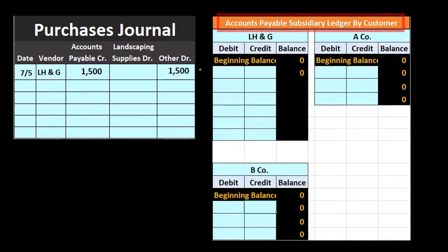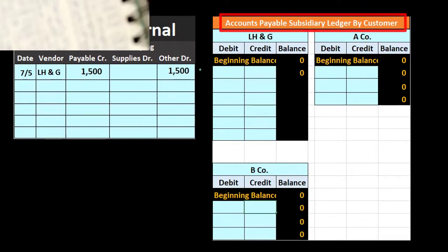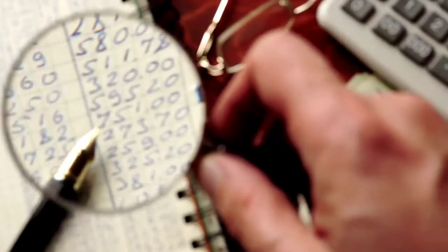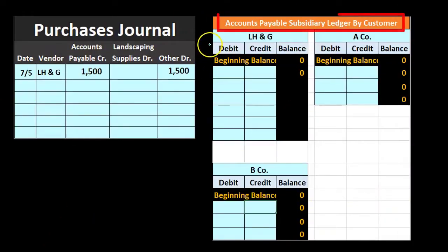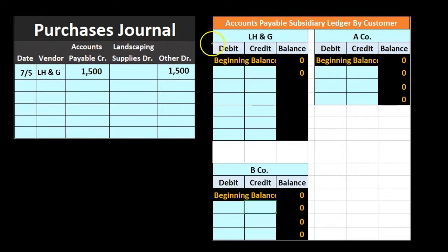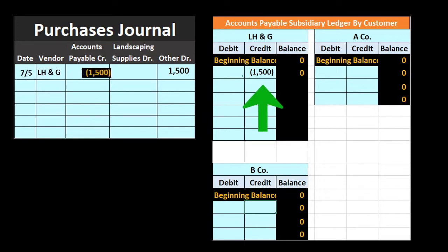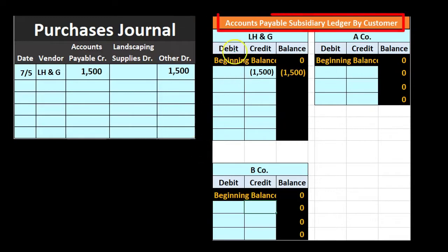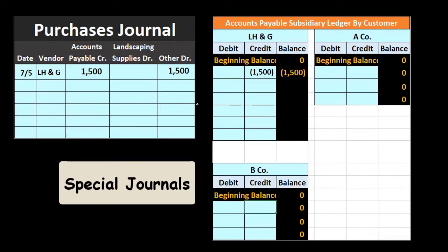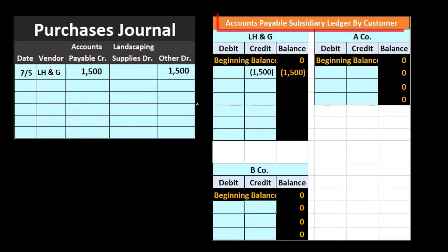As we record transactions, we also record to the accounts payable subsidiary ledger. Note that this is not the general ledger or a journal entry — it is the subsidiary ledger. We track who we owe money to as we go. For LH&G, we record that we owe them $1,500, bringing their balance up to $1,500.